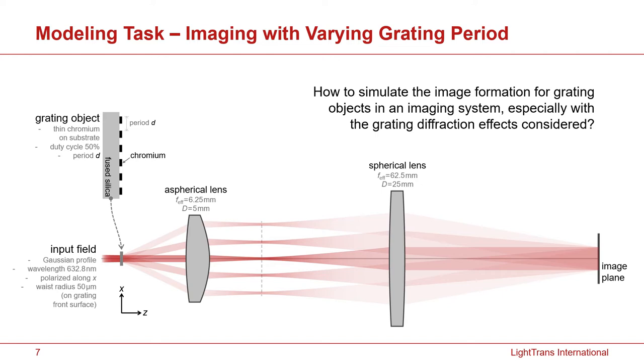In this example, I choose a Gaussian beam which represents a laser beam as a source, and it first illuminates a grating object. The grating is made of chromium, a metal grating which is typically used as a test object in optics when you investigate, for example, the resolution of a system. And then I have two spherical lenses which make a 10 times magnification imaging system.